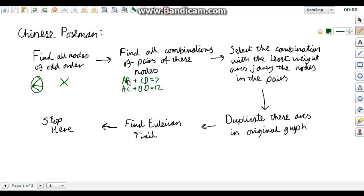In this case, this one would be the one you would pick because the weight of the arcs joining the nodes in your pairs is the least.